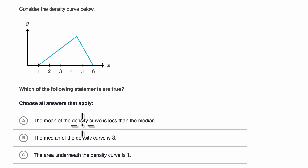The mean of the density curve is less than the median. Pause this video and see if you can figure out whether that's true. Well, we don't know exactly where the mean and median are just by looking at this, but remember, the median is going to be the value for which the area to the right and the left are going to be equal.